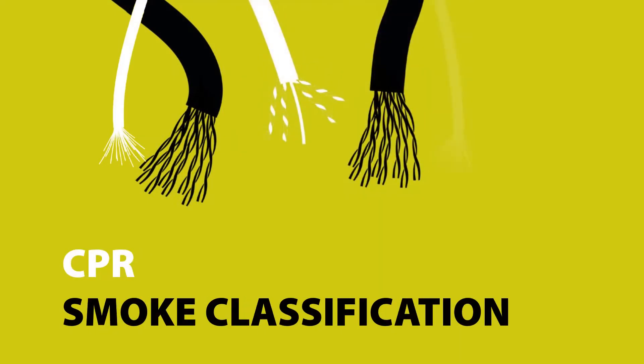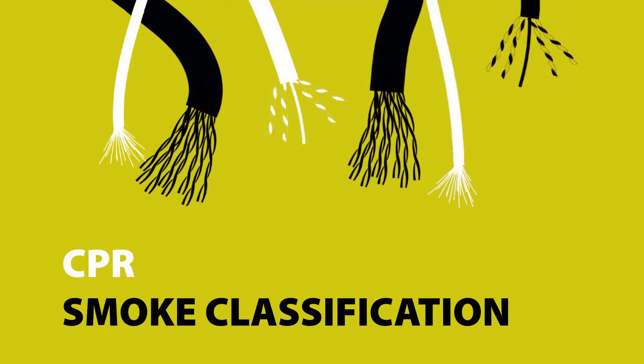This particular one relates to the Construction Products Regulations, and is the result of the mistaken claim by one system manufacturer that the smoke classification of S1 is higher than that of S1a or S1b.